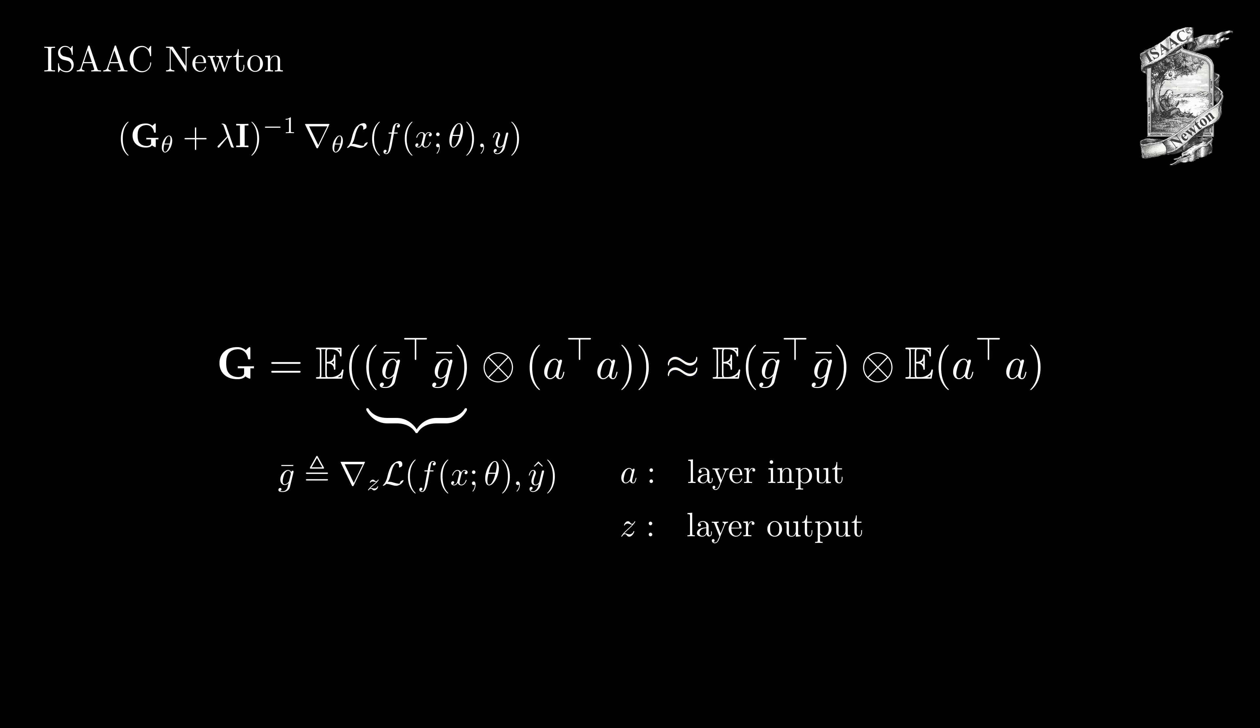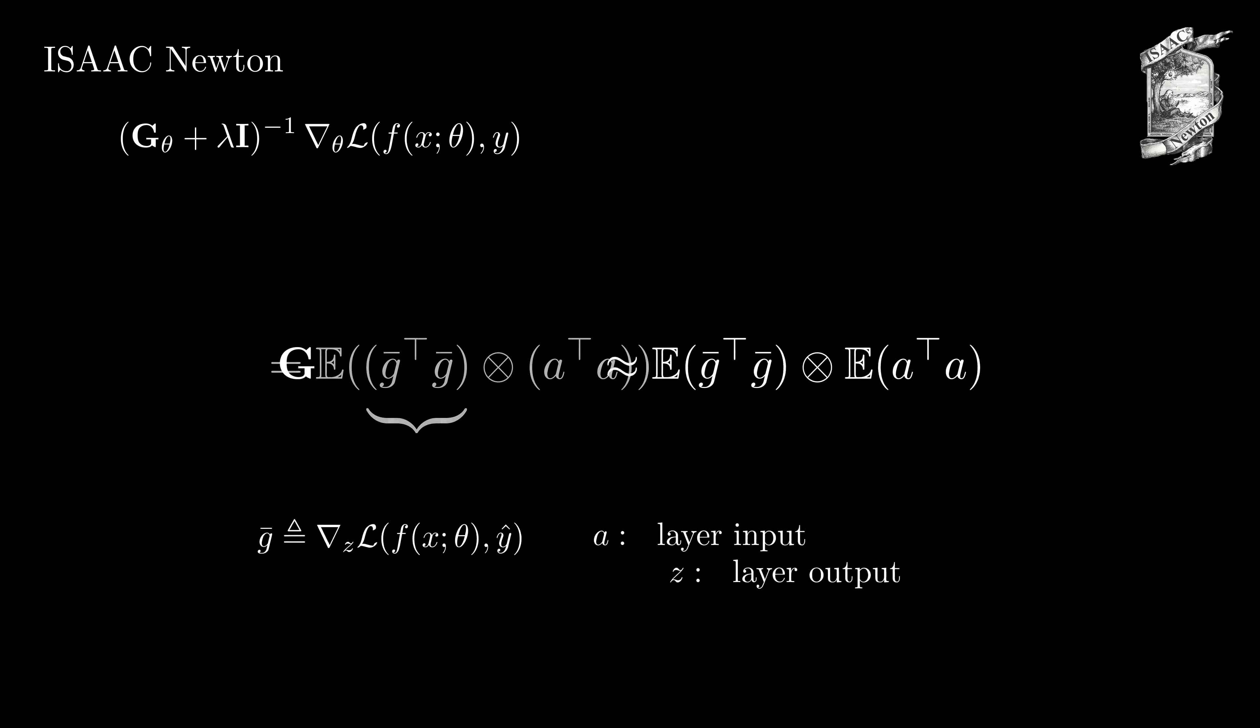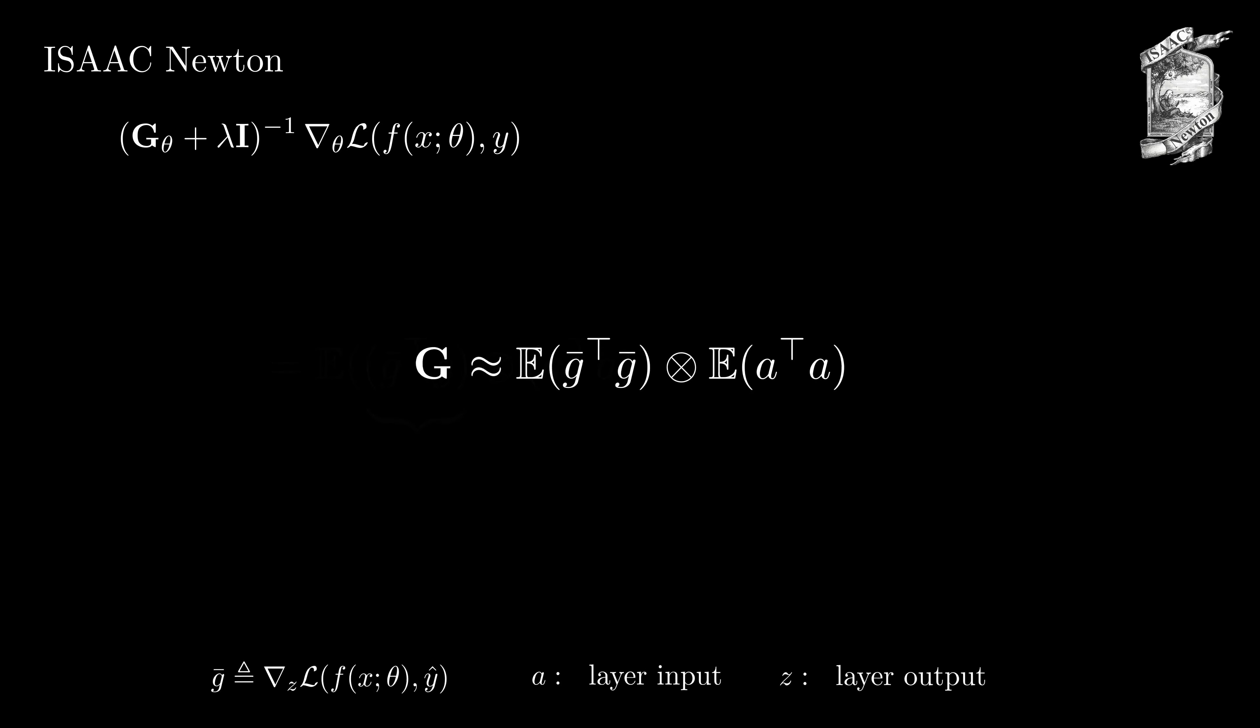Let's look further into how we can compute the KFAC approximation of the Gauss-Newton matrix. The inputs a to our layer are readily available and this part is easy to compute. However, for g bar, the gradient of the loss to a random sample of the prediction would require a second backpropagation path and is therefore expensive to compute.